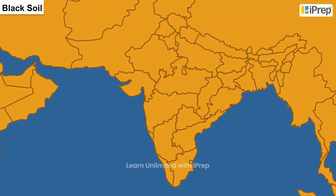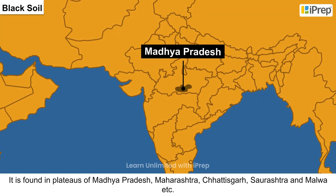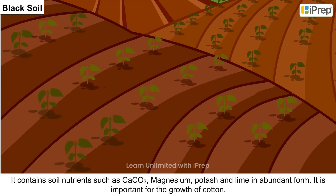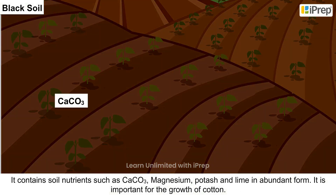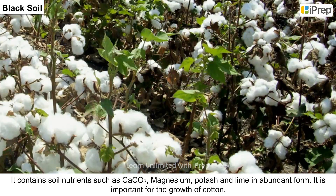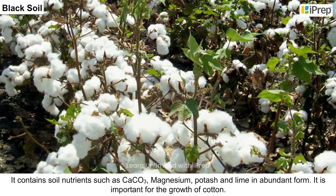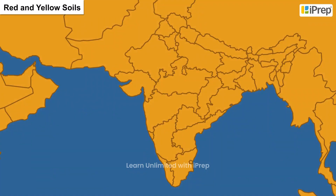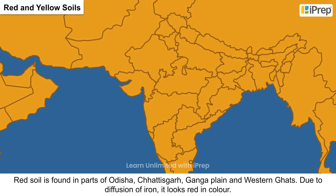Black soil is found in the plateau of Madhya Pradesh, Maharashtra, Chhattisgarh, Saurashtra, and Malwa. It contains soil nutrients such as CaCO₃, magnesium, potash, and lime in abundant form. It is important for the growth of cotton.